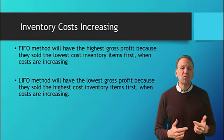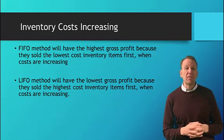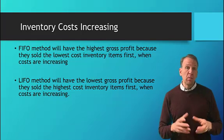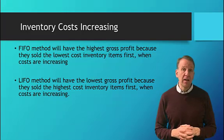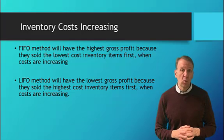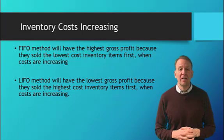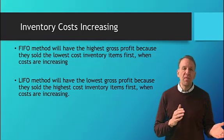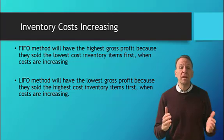The opposite is true with LIFO. Under LIFO, last in, first out, if the prices are increasing, then we're selling those more expensive items, and our cost of goods sold will be higher. Hence, our gross profit will be lower. And the average method and specific identification will be in between.